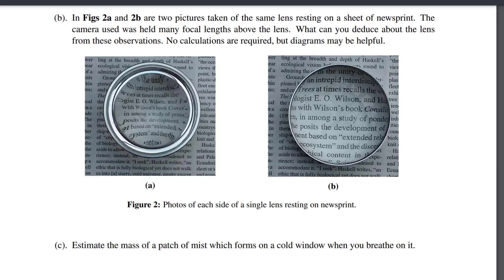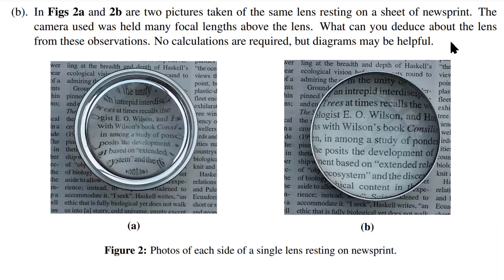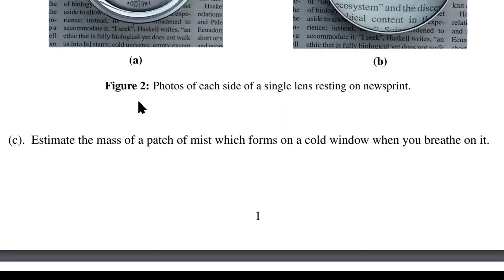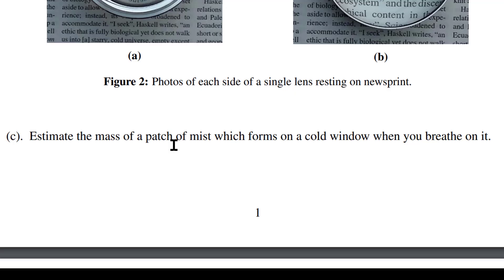Parts B and C are also really fun. We have two pictures taken of the same lens — what can you deduce about the lens from these observations? No calculations are required. And for part C, estimate the mass of a patch of mist on a cold window when you breathe on it.